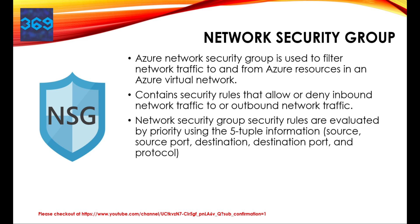A flow record is created for existing connections, and communication is allowed or denied based on the connection state of the flow record. The flow record allows a network security group to be stateful. If you specify an outbound security rule to any address over port 80, for example, it's not necessary to specify an inbound security rule if communication is already established. You only need to specify an inbound security rule if communication is initiated externally. The opposite is also true — if inbound traffic is allowed over a port, it's not necessary to specify an outbound security rule to respond to traffic over that port.